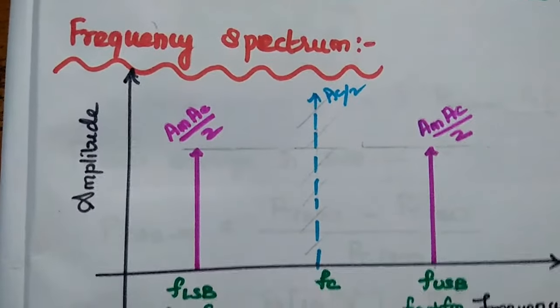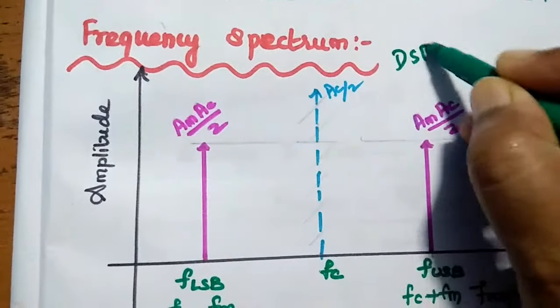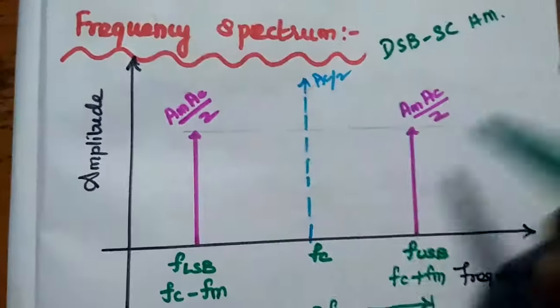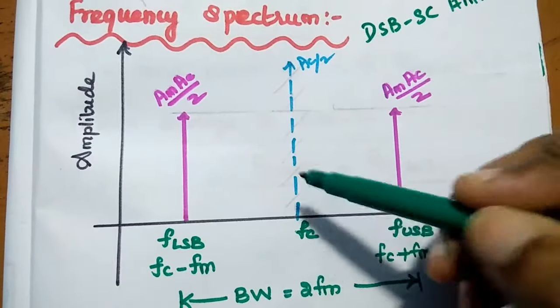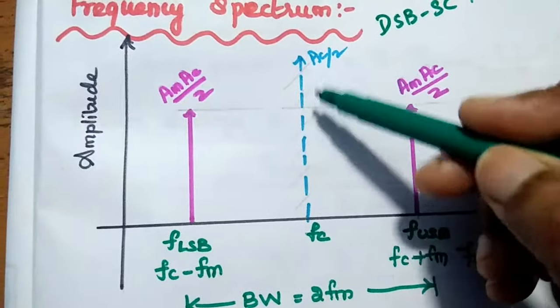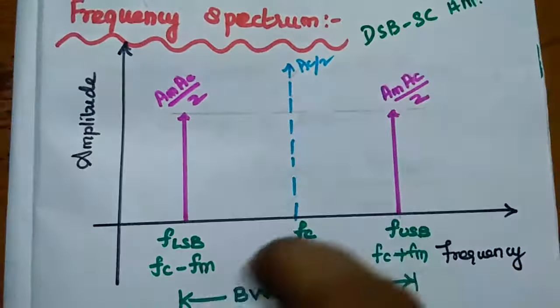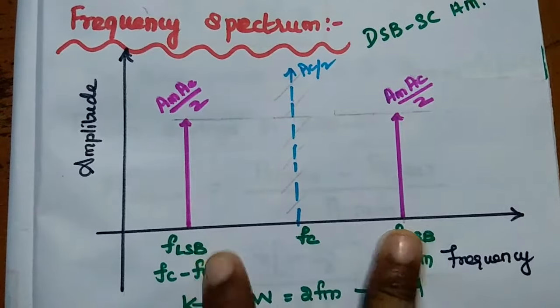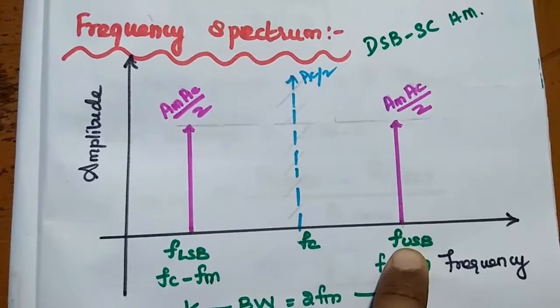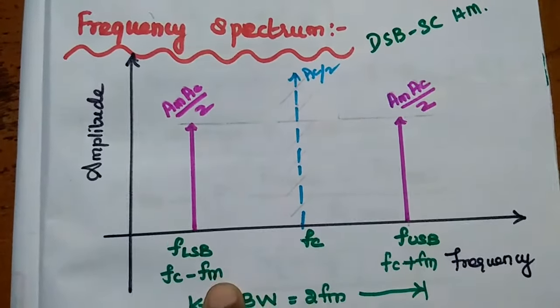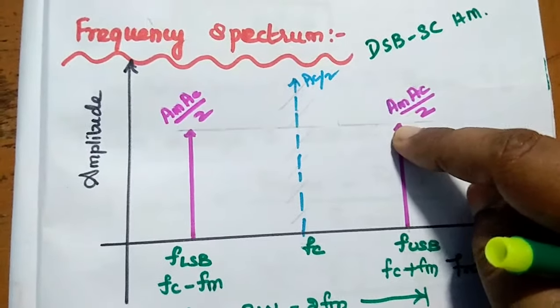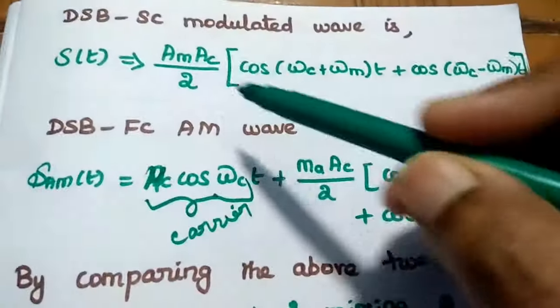The frequency spectrum for double sideband suppressed carrier amplitude modulation shows the carrier signal suppressed — indicated by a dotted line — so there is no carrier signal. The spectrum has only the sidebands: the upper sideband at FC + FM and the lower sideband at FC − FM. The amplitude of each sideband in the suppressed carrier wave is AM·AC/2.